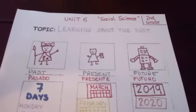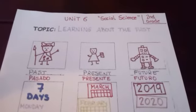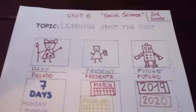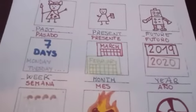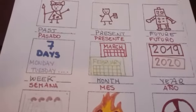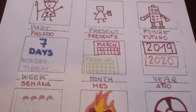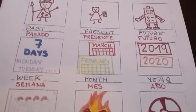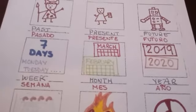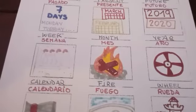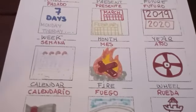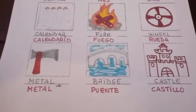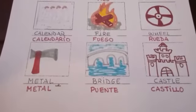Now let's go through the vocabulary of the unit. We have: past, present, future. We have the days of the week, the months, and the year. This year is 2020. Calendar, fire, wheel, metal, tool, bridge.